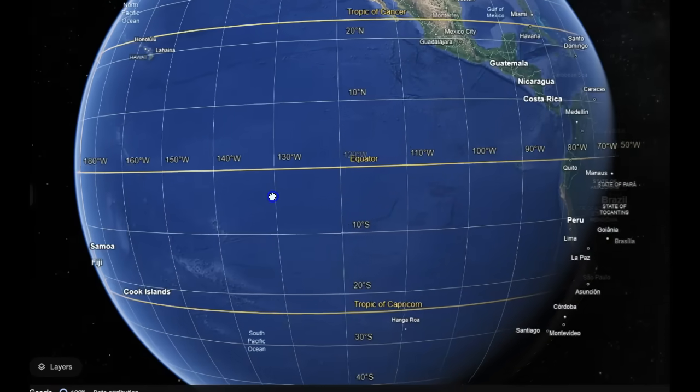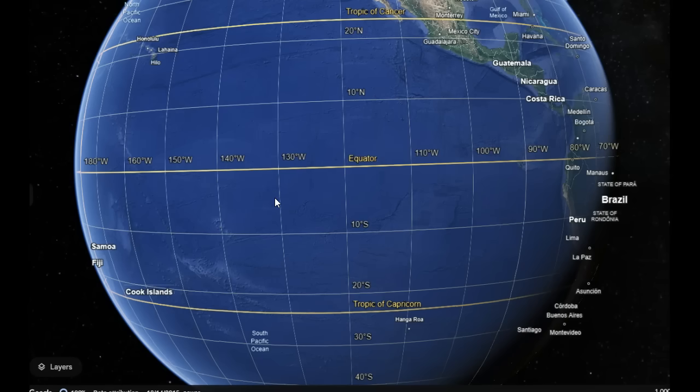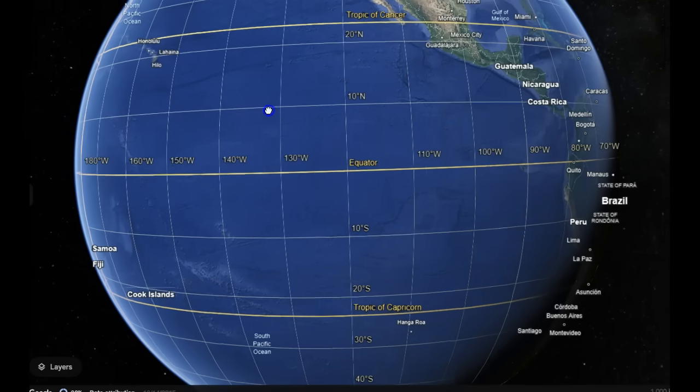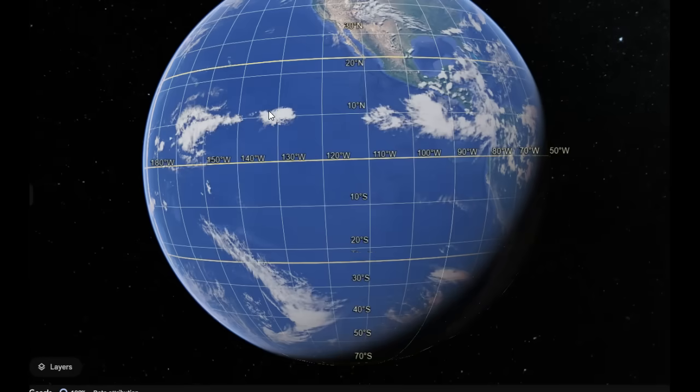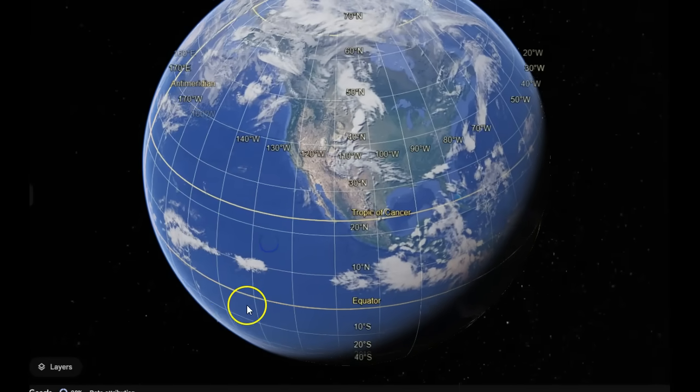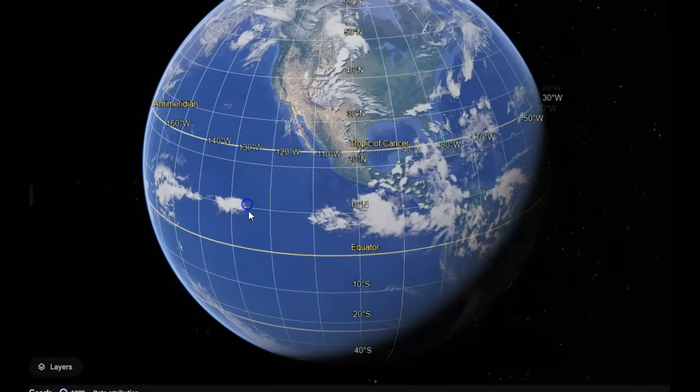400 foot bulge, equatorial bulge. I've talked about it for 10 years at least, that if there was a sudden pole shift, then you would see a 400 foot wave move from here along the equator across the planet in both directions.